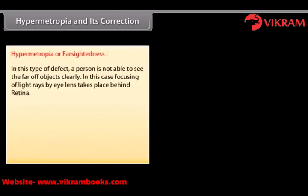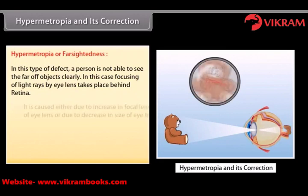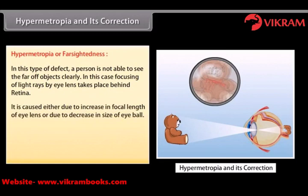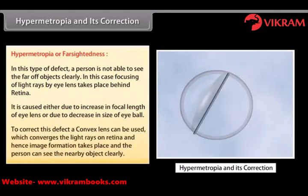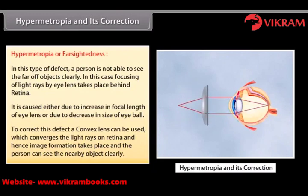Hypermetropia — in this type of defect, a person is not able to see nearby objects clearly. In this case, focusing of light rays by the eye lens takes place behind the retina. It is caused either due to increase in focal length of the eye lens or due to decrease in size of the eyeball. To correct this defect, a convex lens is used which converges the light rays on the retina and hence the person can see the nearby object clearly.